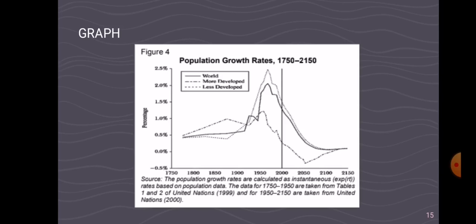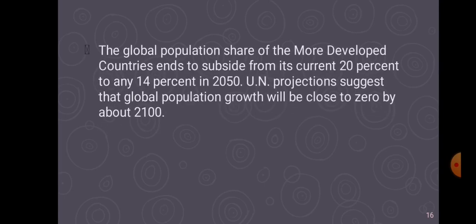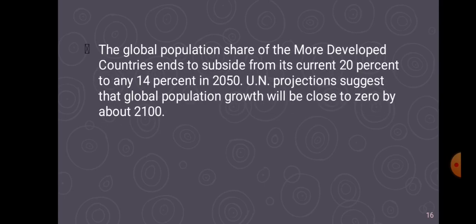Our second graph shows us population growth rates from 1750 to 2150. This graph shows us that the world population experienced a surge in population growth, but after World War II it dropped due to many dying in the war. The global population share of the more developed countries tends to subside from its current 20% to around 14% in 2050. UN projections suggest that global population growth will be close to zero by about 2100.